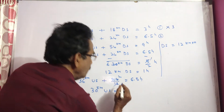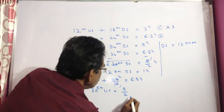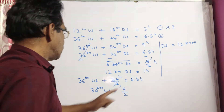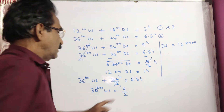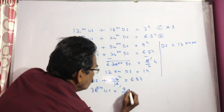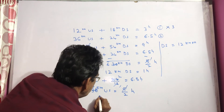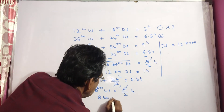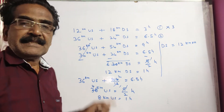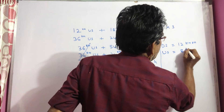4.5 hours means 9 by 2 hours. So 36 kilometers upstream takes 9 by 2 hours. That gives 8 kilometers upstream traveled in 1 hour. That means upstream speed is equal to 8 kmph.